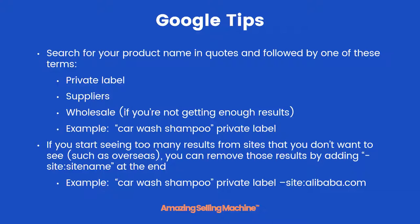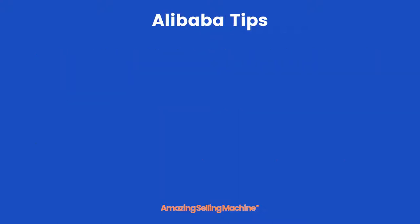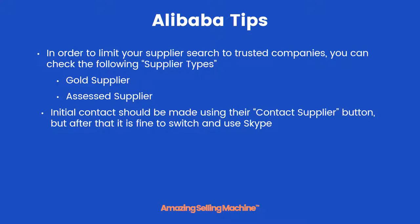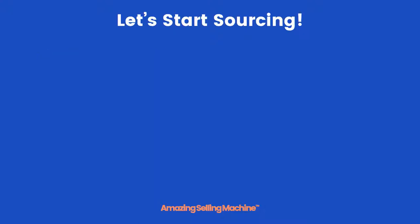Here are some tips for using Alibaba. To limit your supplier search to trusted companies, check the following supplier types on the left-hand side: Gold Supplier and Assessed Supplier. Gold Suppliers have paid to be a member of Alibaba. Assessed Suppliers have had an outside third-party company review them to verify they are a legitimate supplier. Initial contact should be made using the 'Contact Supplier' button built inside Alibaba.com. After that, if they want to switch to Skype, that's absolutely normal and much easier for back-and-forth conversation.